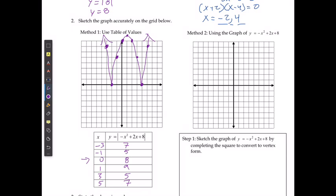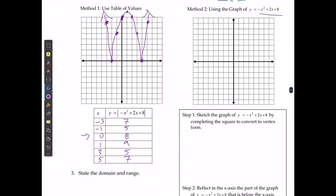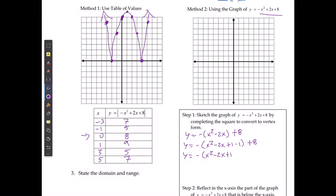If I'm going to graph it using the general form, I'll start by completing the square. So y equals negative of x squared minus 2x plus 8. Then y equals negative of x squared minus 2x — divide negative 2 by 2 and square it — plus 1, minus 1, plus 8. That gives y equals negative of x squared minus 2x plus 1, and moving the negative 1 out (multiplied by that negative coefficient) gives plus 1. Taking the square root of the trinomial: negative x minus 1 squared, then combining constants gives plus 9. So I have a vertex at 1 and 9, and an a-value of negative 1.